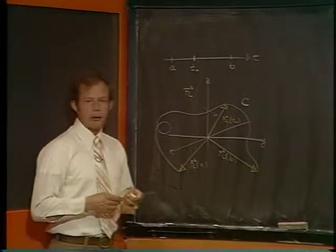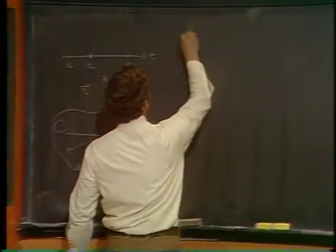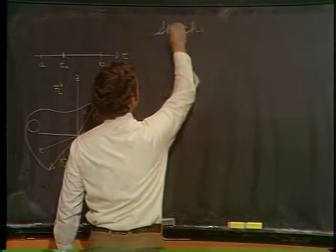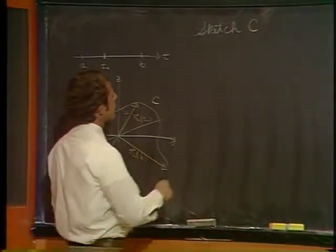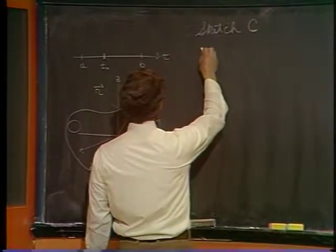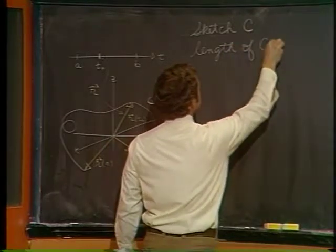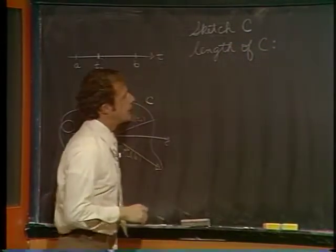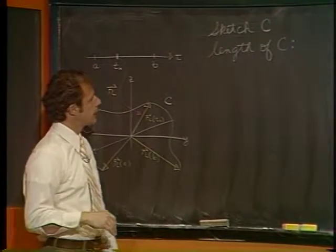What we talked about last time was basically how to draw the path. That wasn't too bad. So one item we're going to do is sketch c for a given r. The second item is talk about the length of c.